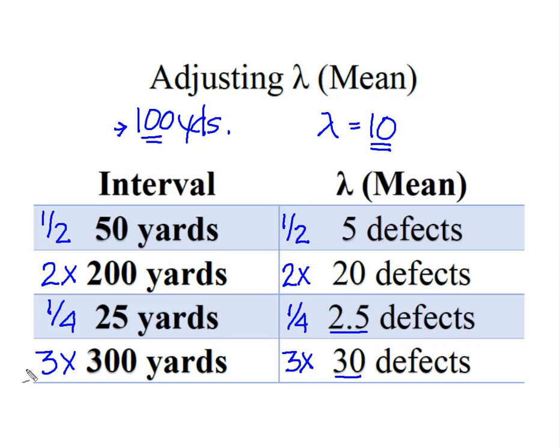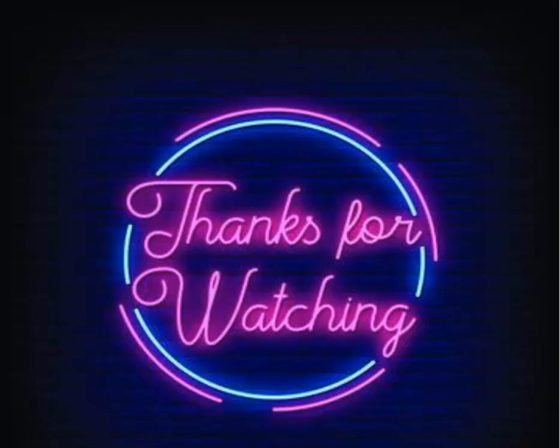So you simply adjust it. It's just up and down based on the proportion of that original interval that was used to determine that original value of the mean. Remember that one simple rule of adjusting the value of the mean up and down based on your interval and you should have this no problem. I hope you found this useful and thanks for watching.